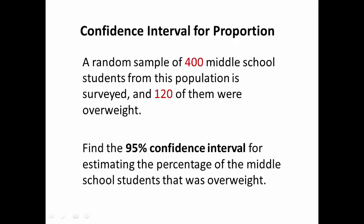This video will show you how to use ARC to compute a 95% confidence interval for a proportion. In this example we had a sample of 400 and 120 of them were overweight, so we want to find a 95% confidence interval for estimating the percentage of overweight students in the population.